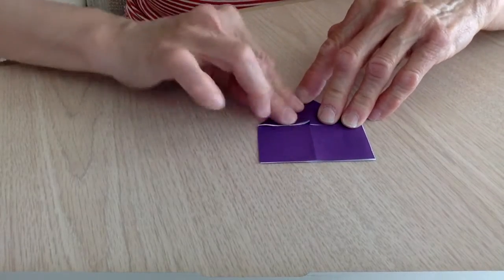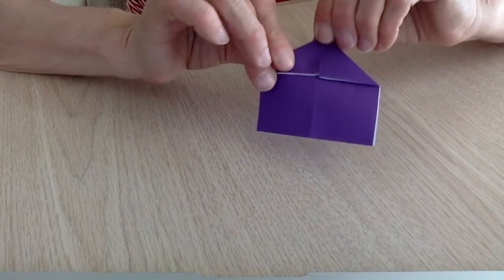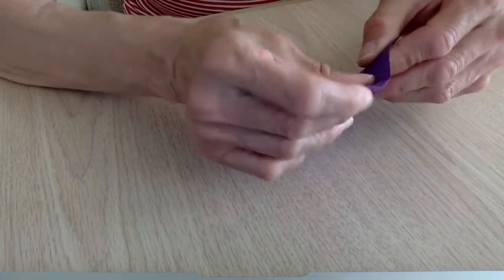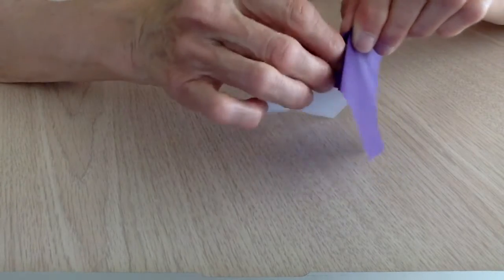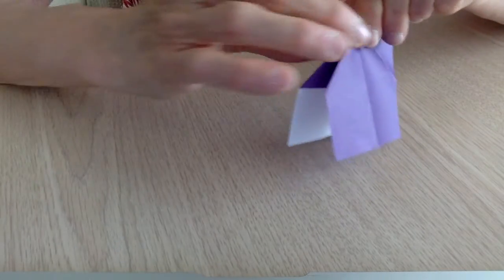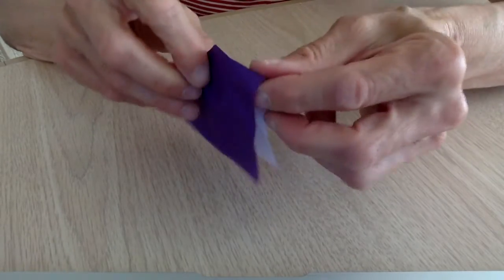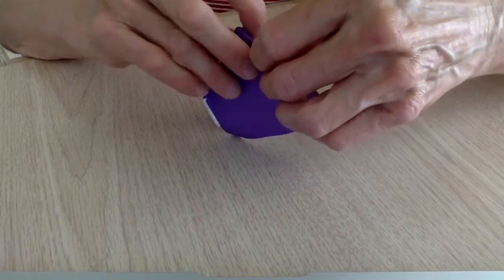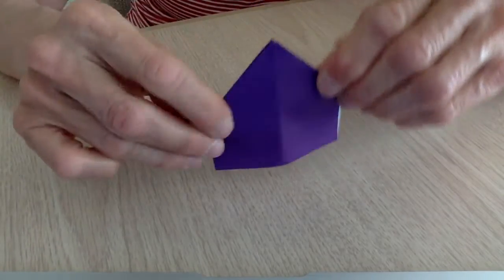Then what you need to do is open and then collapse on where you had your folds. On the other side, open and then collapse where you have the folds and you'll end up with this.